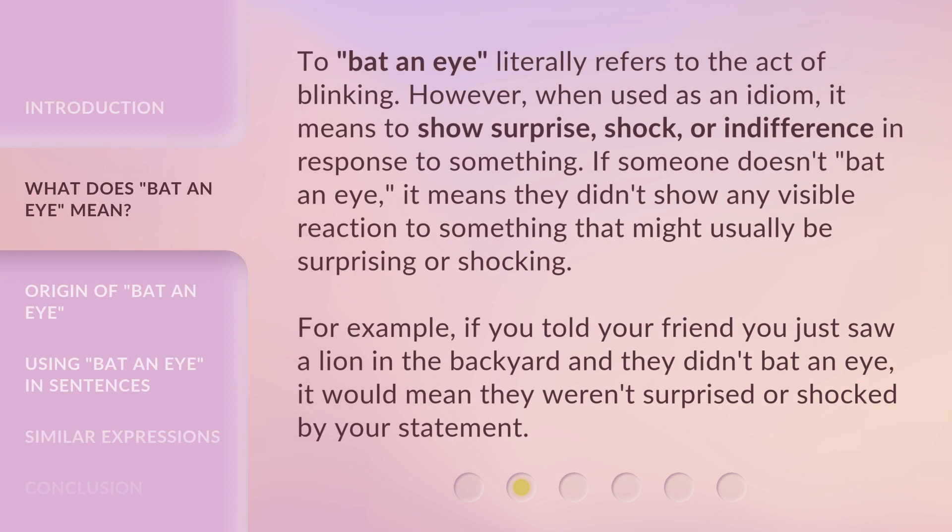To 'bat an eye' literally refers to the act of blinking. However, when used as an idiom, it means to show surprise, shock, or indifference in response to something. If someone doesn't bat an eye, it means they didn't show any visible reaction to something that might usually be surprising or shocking. For example, if you told your friend you just saw a lion in the backyard and they didn't bat an eye, it would mean they weren't surprised or shocked by your statement.